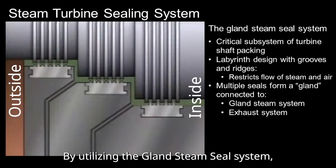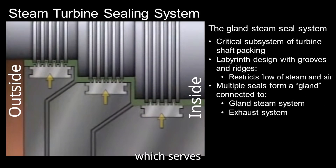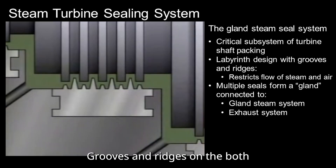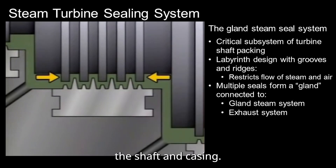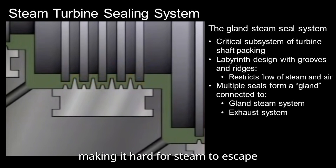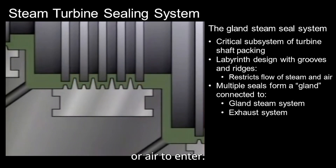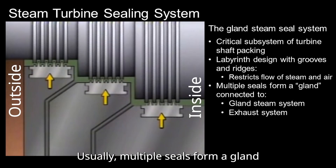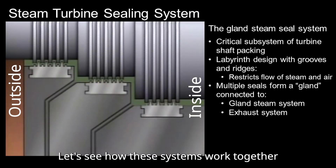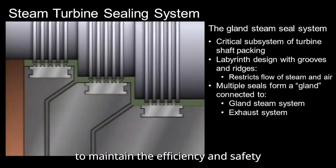So how do we stop this? By utilizing the gland steam seal system, which serves as a critical subsystem of the turbine shaft packing. These seals create a tortuous path using a labyrinth design — grooves and ridges on both the shaft and casing. This design restricts flow, making it hard for steam to escape or air to enter. Usually, multi-seals form a gland, which is connected to a gland steam system and an exhaust system.